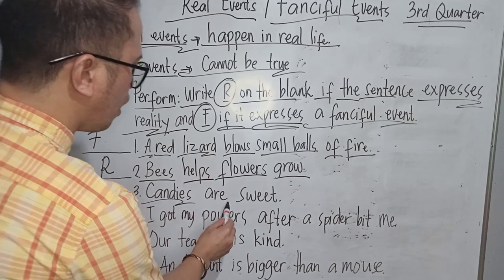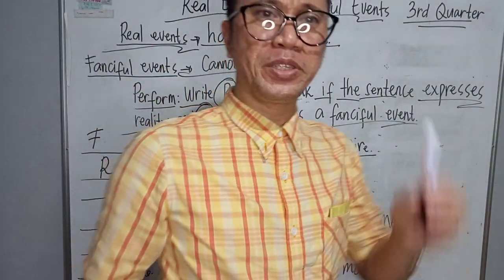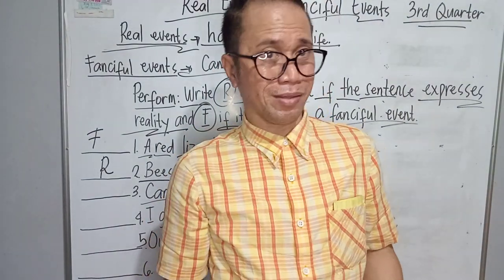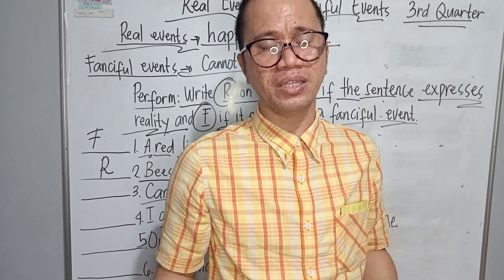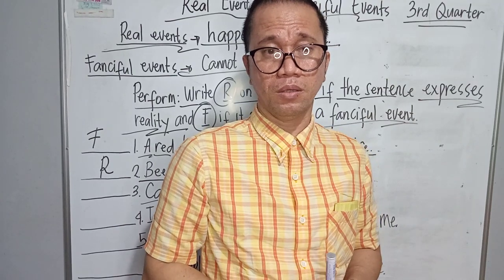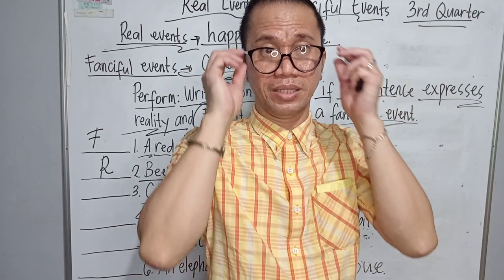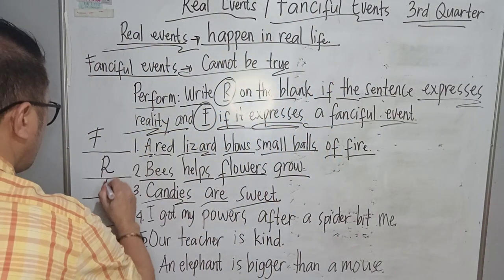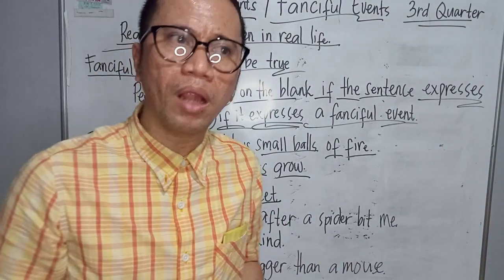Number three: Candies are sweet. Even children really like to eat sweets because they really like candies. But on the downside, when we eat too many candies, we can get a toothache or have a dental problem. So the answer is R — it happens in real life.